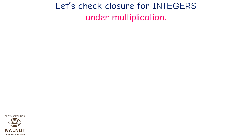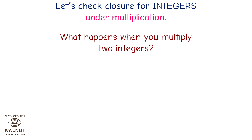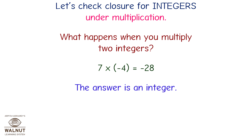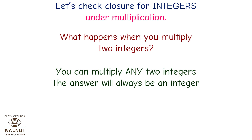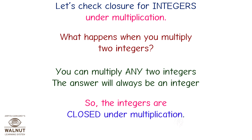Let's check closure for integers under multiplication. 7 multiplied by minus 4 is equal to minus 28 — an integer. Minus 2 multiplied by minus 4 is equal to 8 — an integer. You can multiply any two integers and the answer will always be an integer. So integers are closed under multiplication.